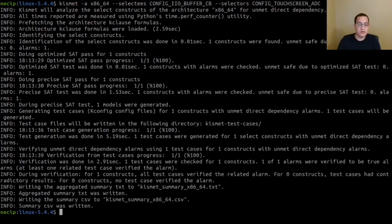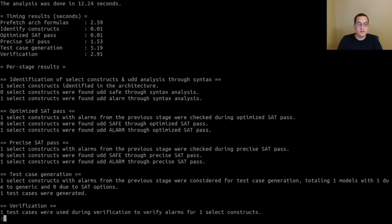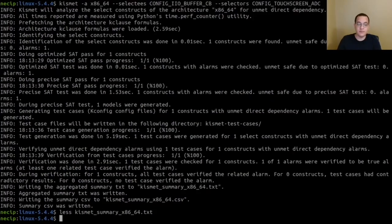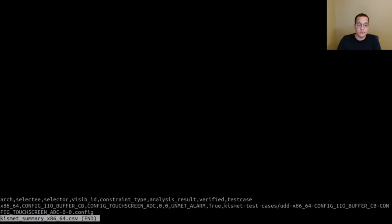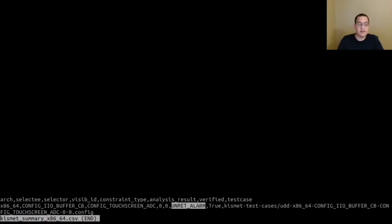Here we can see the contents. And this file will include the performance measurements and the information on each pass done throughout the analysis. As you can see, we will have a few different passes and we will have the results for these passes. And we will also have a CSV file containing the analysis results for each select construct. In this file, since we tested a single select construct, we have a single line of results. And the results say that there is an unmet alarm, which means there is an unmet dependency bug for this select construct.